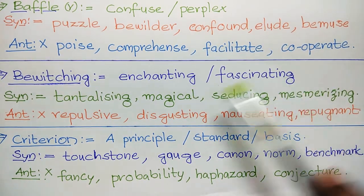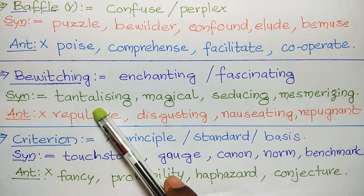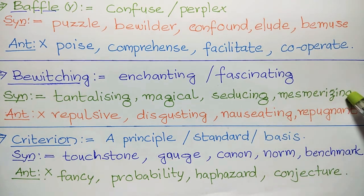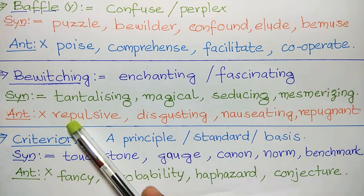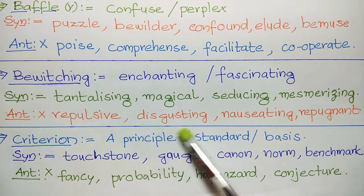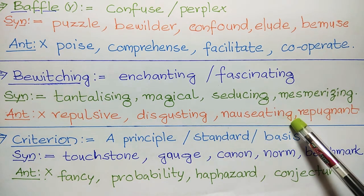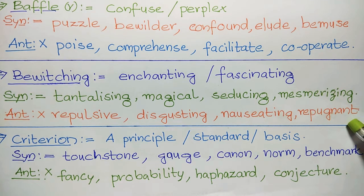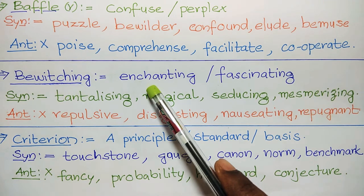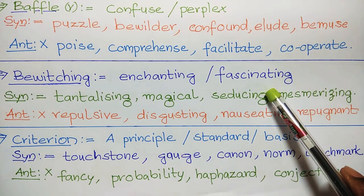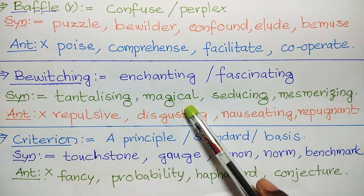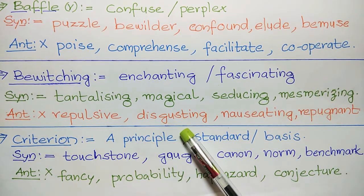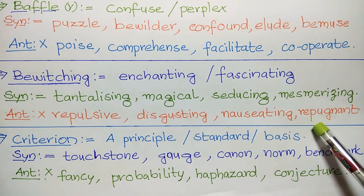Next is bewitching. Bewitching means enchanting or fascinating. Synonyms: tantalizing, magical, seducing, mesmerizing. Antonyms: repulsive, disgusting, nauseating, repugnant.